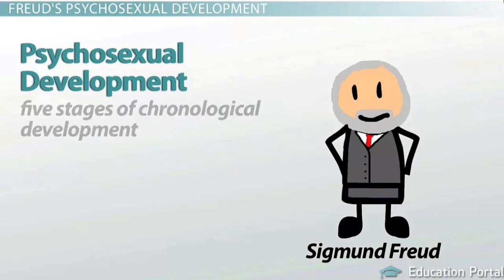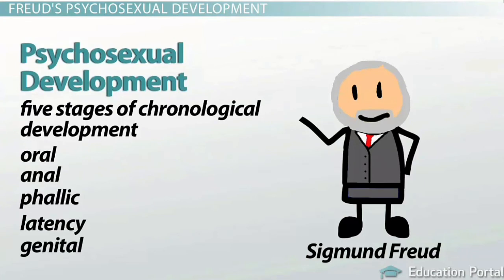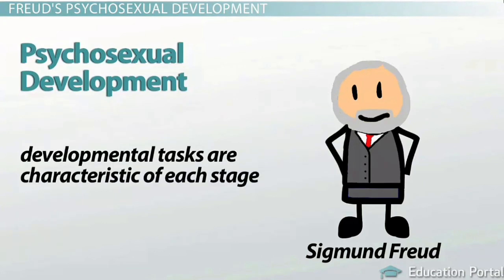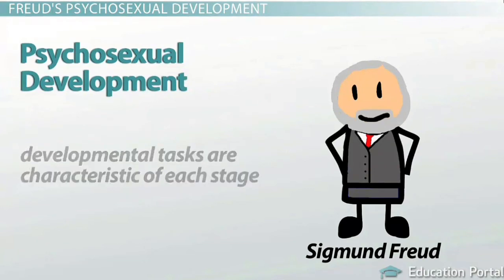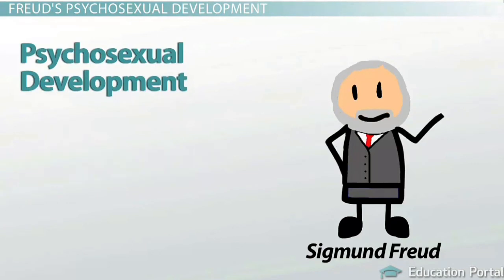Freud postulates five stages of chronological development that begin in infancy. These stages are oral, anal, phallic, latency, and genital. Key developmental tasks are characteristic of each stage. Freud believed the first three stages are the most important. These three stages occur before the age of six and form the foundation for personality development.